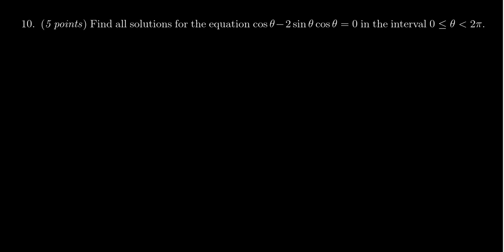When I look at this equation, the first thing I notice is the right-hand side is 0, so maybe I could factor the left-hand side. There is a common factor of cos(θ), so factor that out. This gives us cos(θ) times (1 - 2sin(θ)) = 0.